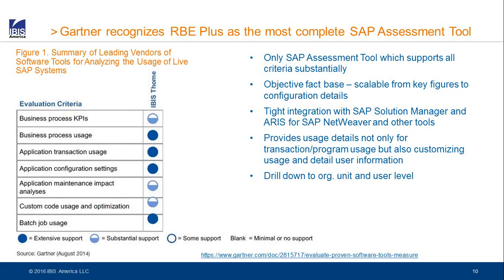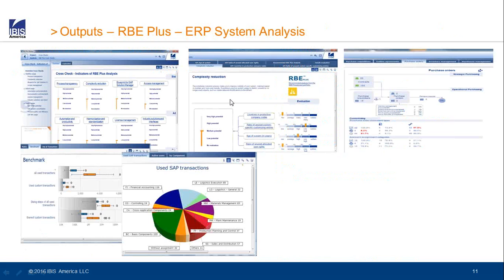Can you show us some examples? What does the RBE Plus tool look like, and what kind of deliverables should someone expect from an RBE Plus analysis? I can show some high-level statistics. On the left side, we start with cross-checks — those are high-level indicators. Where are the potential weaknesses in the current SAP usage? What areas can we improve? We're talking about process transparency, complexity reduction, standardization, license management. Across the board, we come up with statistics and have the underlying data to prove it.